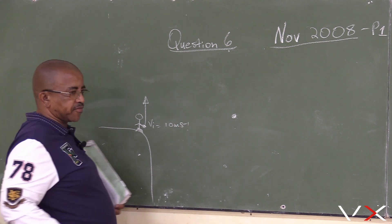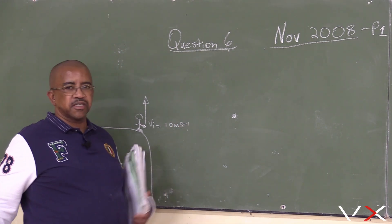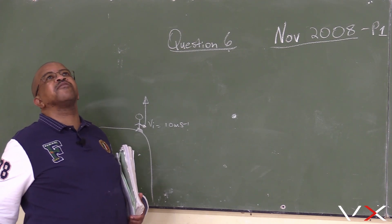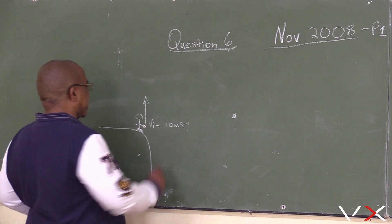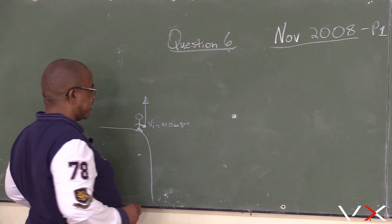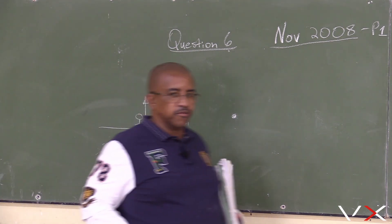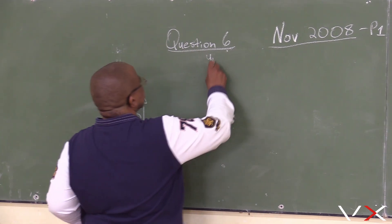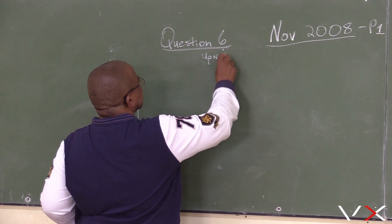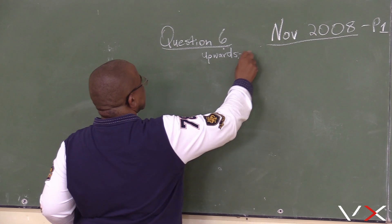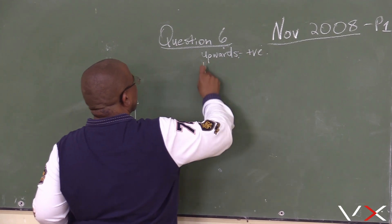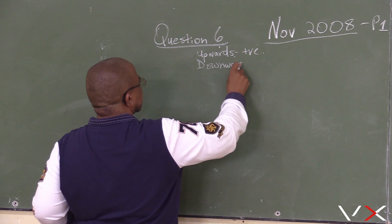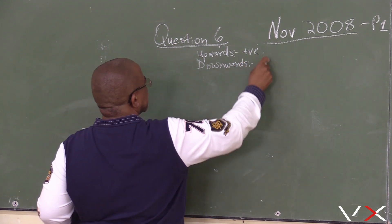From the graph, we can see the graph starts from the positive axis, which means upwards is positive, while downwards is negative.